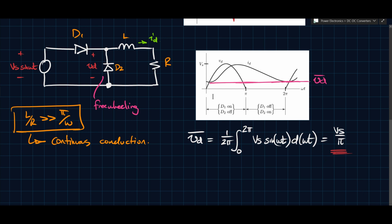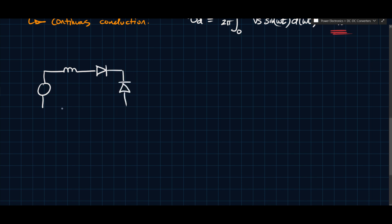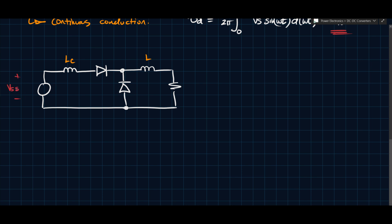We'll now take it one step further and consider a more realistic model. Voltage sources are never purely ideal — they have some inductance, either intentionally introduced or as a byproduct of the system. When we have an inductor on the source side (call it Lc, the commutating inductance) in addition to the filter inductor L on the load side, we end up with slightly different behavior that is worth investigating.